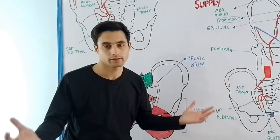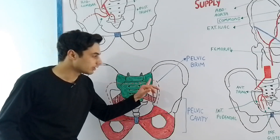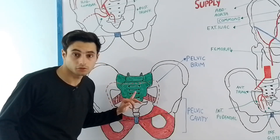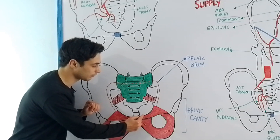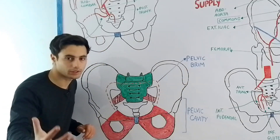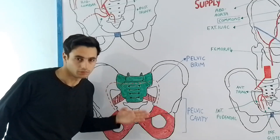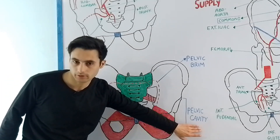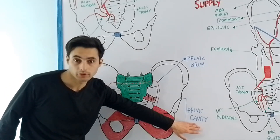Now what is the pelvic brim and the pelvic cavity? Have a look. The pelvic brim is this red dotted line which is extending from one hip bone to the other hip bone. It is a demarcation between the true pelvis and the false pelvis. The iliopectineal line of one hip bone will combine with the iliopectineal line of the other hip bone to form the pelvic brim or the pelvic inlet. Above the pelvic inlet you have the false pelvis, and below it we have the true pelvis which will contain the pelvic cavity. In other words, below the iliopectineal line or the pelvic inlet, we have the pelvic cavity.